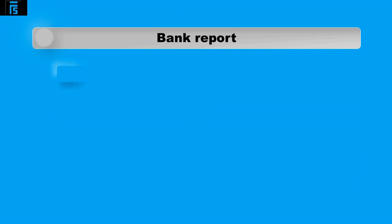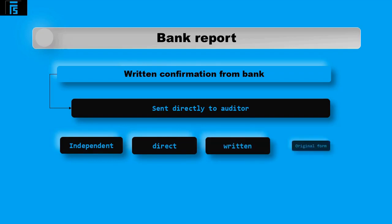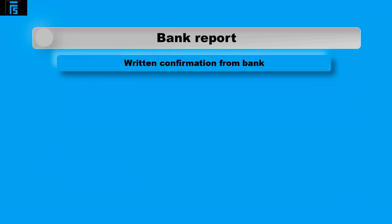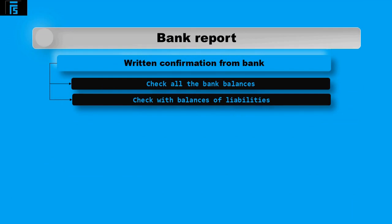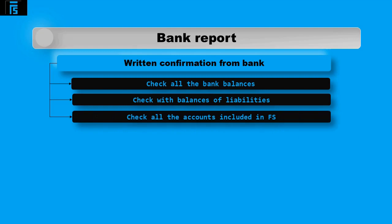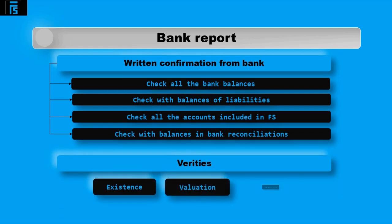The bank report is written confirmation from the bank sent directly to the auditor, making it an excellent piece of evidence — independent, direct, written and in its original form. It confirms all bank balances held by the client for the year and any liability balances. The auditor should ensure all bank accounts have been included in the financial statements by agreeing to the trial balance, and agree balances to bank reconciliations as there may be timing differences — verifying existence, valuation and completeness.